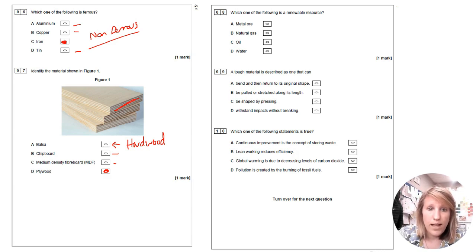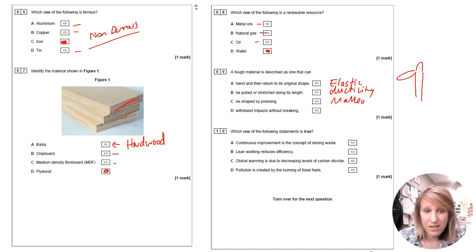Which one of the following is a renewable resource? Well, metal ore is not renewable. It's running out. Natural gas is running out. Oil is running out. So water is your renewable source there. A tough material is described as one that can bend and then return to its original shape. Well, that's something is elastic, be pulled or stretched along its strength. That's ductility. Remember the duck with the stretched neck is shaped by pressing. That's malleability. So withstand impacts without breaking. That's the right answer. That's what toughness is there.